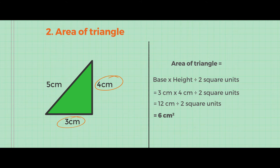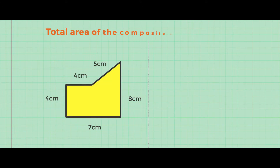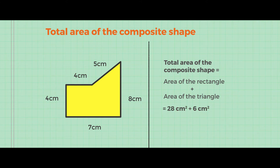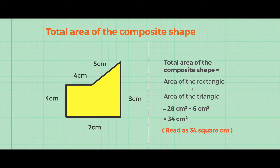Now let's calculate the total area of the composite shape. The total area is the area of the rectangle plus the area of the triangle. That is 28 square centimetre plus 6 square centimetre, which gives you 34 square centimetre. Remember to read it as 34 square centimetre.